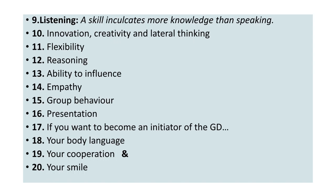Number eleven: flexibility. It is an important personality trait crucial in group discussion. Having a firm inflexible point of view creates the impression of being stubborn. Number twelve: reasoning — one of the most difficult aspects of GD. It demonstrates the ability to comprehend the essence of the given topic and put forward a compelling argument. Many participants go off track, and few others contradict themselves due to lack of clarity. Number thirteen: your ability to influence. Since there is no appointed leader in a GD, influencing skills play a vital role.